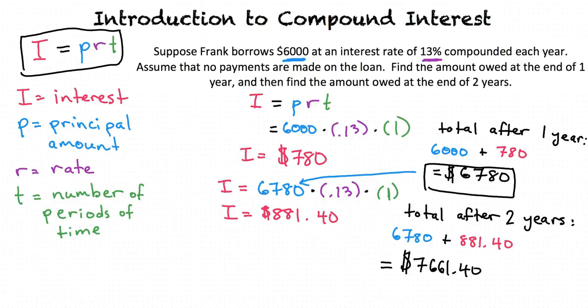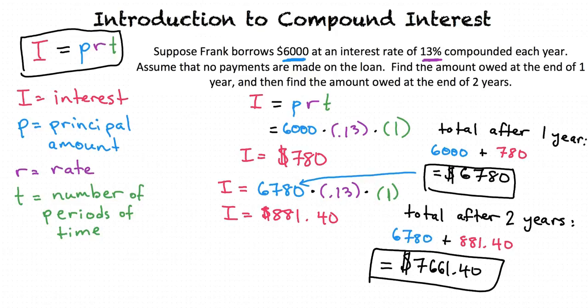Very good. You've learned this well. So if I was also asked to find the amount owed after 3 years, then I would take $7,661.40 as the new principal amount, 0.13 for R, and 1 for T again, multiply them together, and then add this to $7,661.40? Exactly, and this process would continue for every year the interest is compounded.